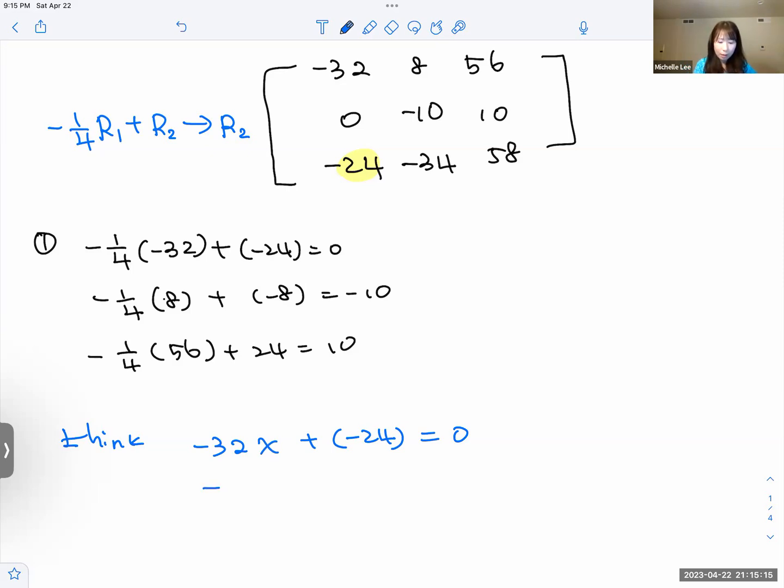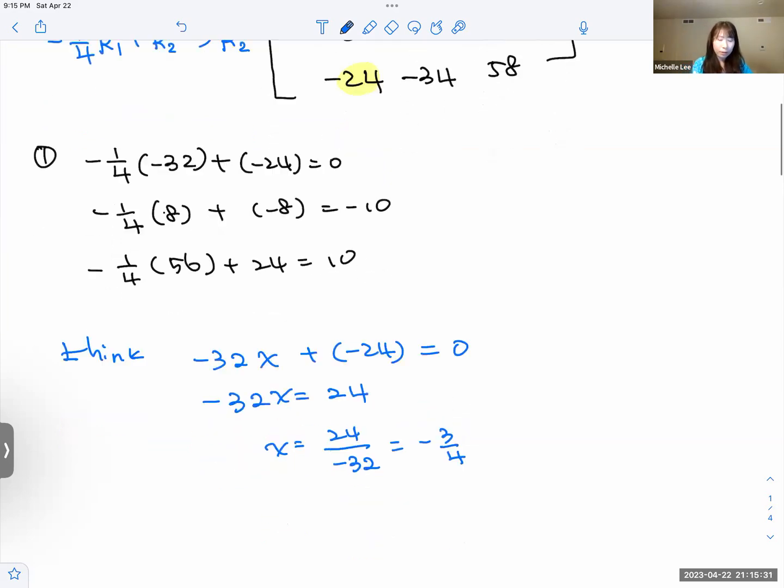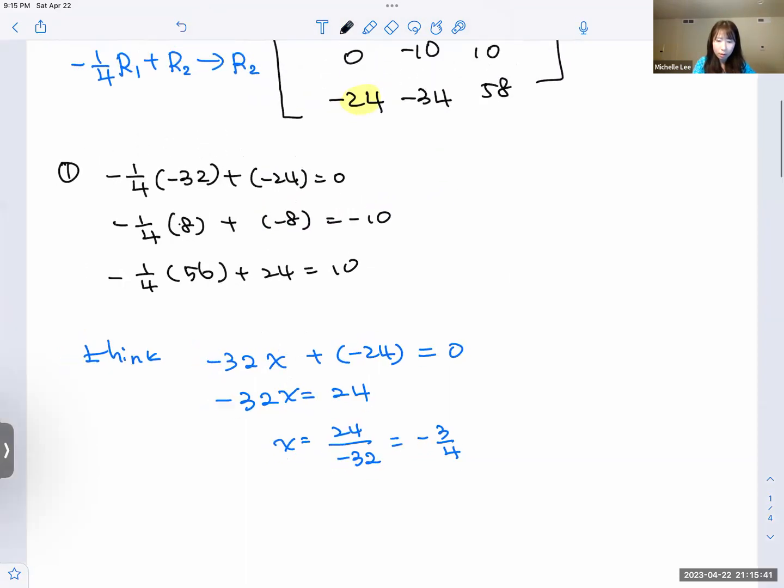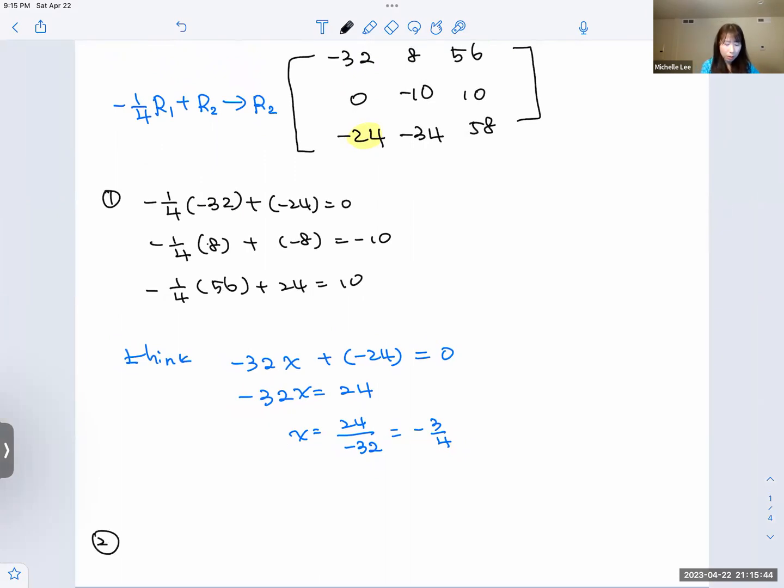Then we have negative 32 equal to positive 24 with x, and x equal to 24 over negative 32. Now, we do simplify, so we get negative 3/4. Now, we're going to do second one. Here. Negative 3/4. This is from there. And R1 plus R3 to make R3.